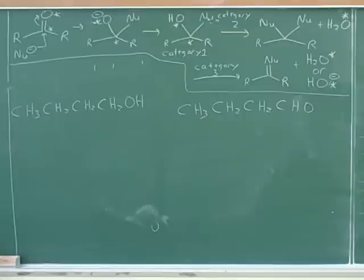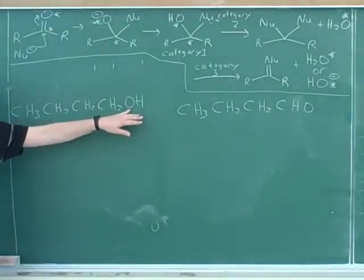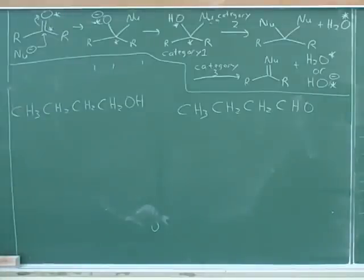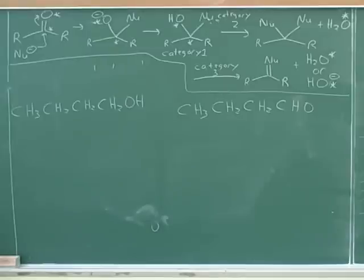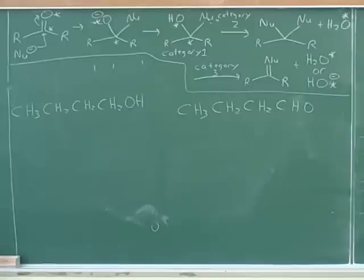The carbonyl absorption is around 1700, slightly different depending on what type of carbonyl compound it is. I wouldn't expect anything in that range for an alcohol. So infrared would be one of the easiest ways to distinguish between these. The important alcohol absorption is in the 3200 to 3500 range — again for infrared. So infrared should really do the trick to distinguish between these two compounds.